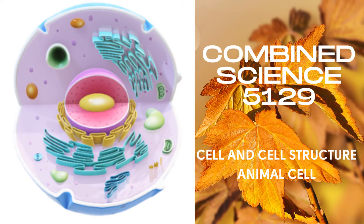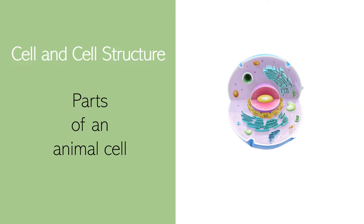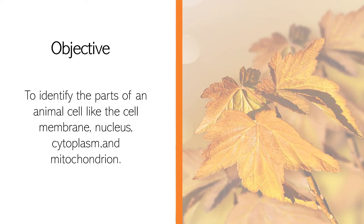Welcome to our Combined Science 51-29 online class. This is Teacher Jeffrey. Our topic for today is about cell and cell structure. We will mainly focus on the parts of an animal cell. Our goal is to identify the parts of an animal cell.